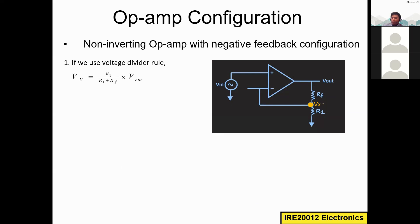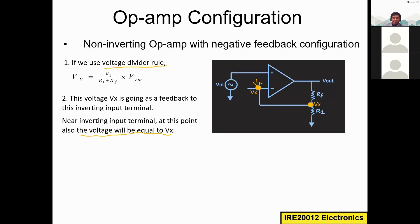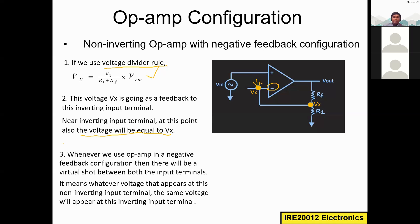At this node, the potential is not zero. Applying the voltage divider rule, we can compute the voltage at this node: Vx = (R1 / (R1 + Rf)) × Vout. That is how we calculate the voltage potential at this point. At the inverting input terminal, the voltage will be equal to Vx, as found by this formula.